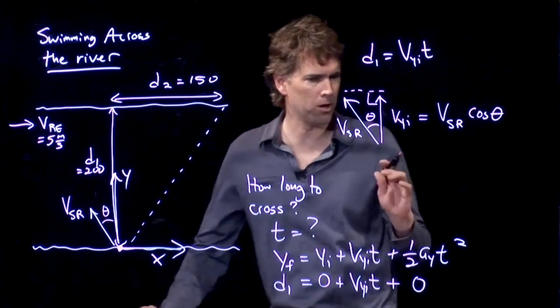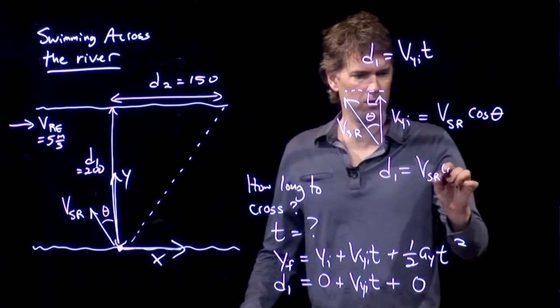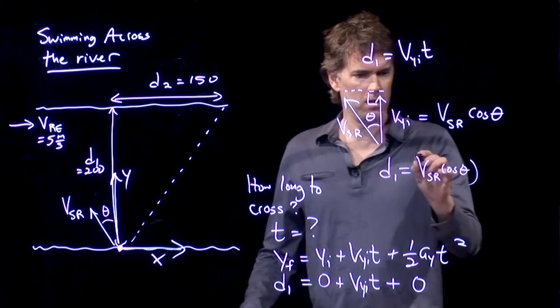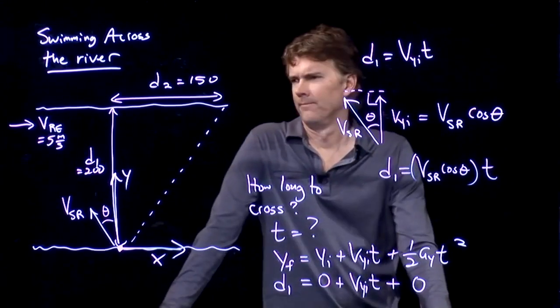Alright. So we have one equation now, d1 equals v s r cosine theta, all of that times t. Alright.